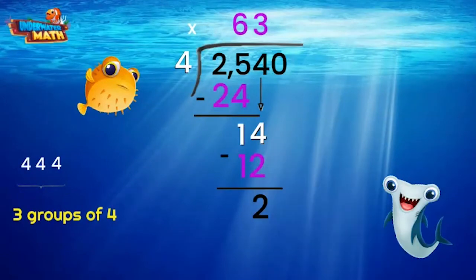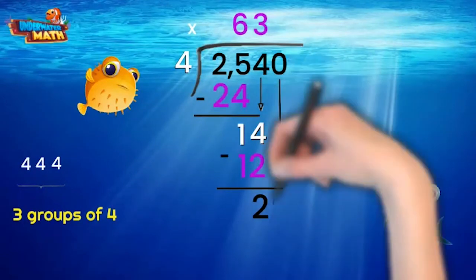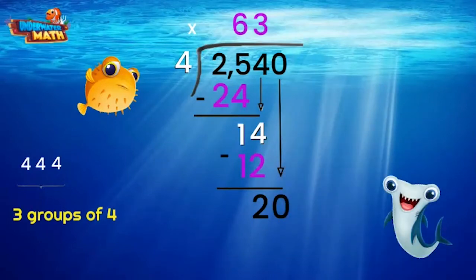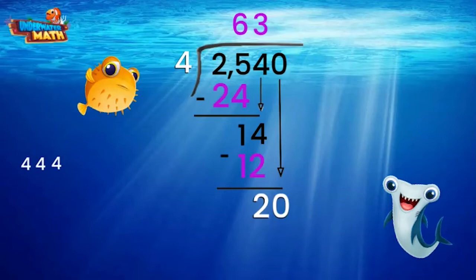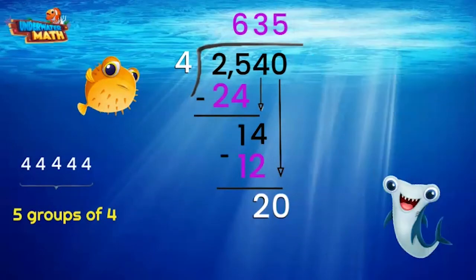4 doesn't fit into 2, so we have to bring down the digit in the ones place. How many 4s fit into 20? 5 fit in exactly! Place that 5 here and multiply to make 20. When we subtract,